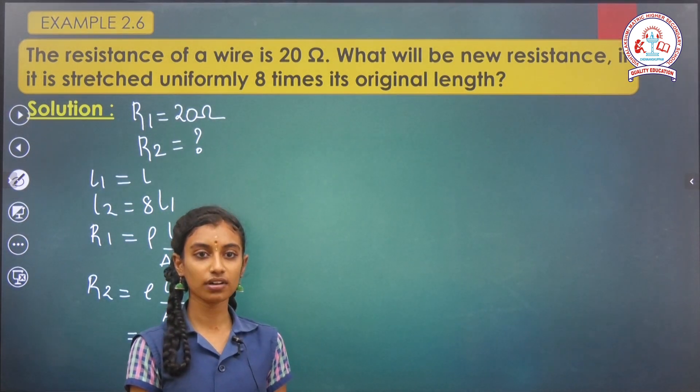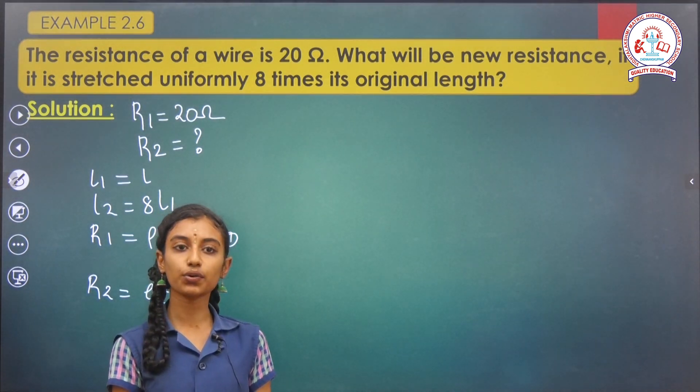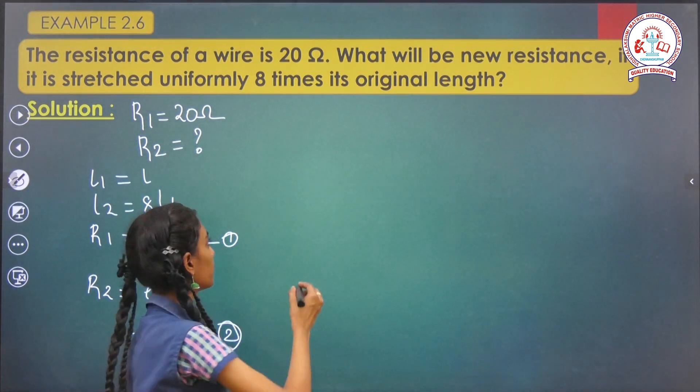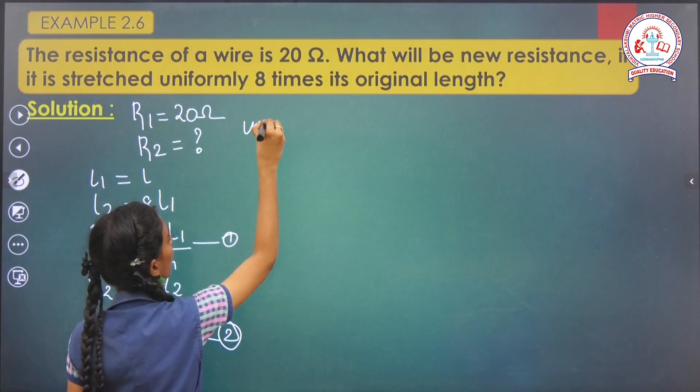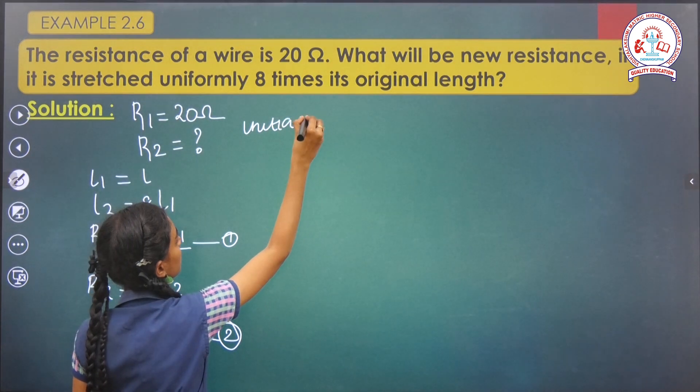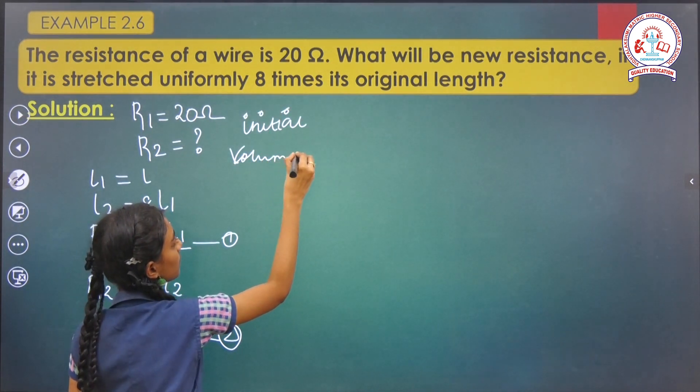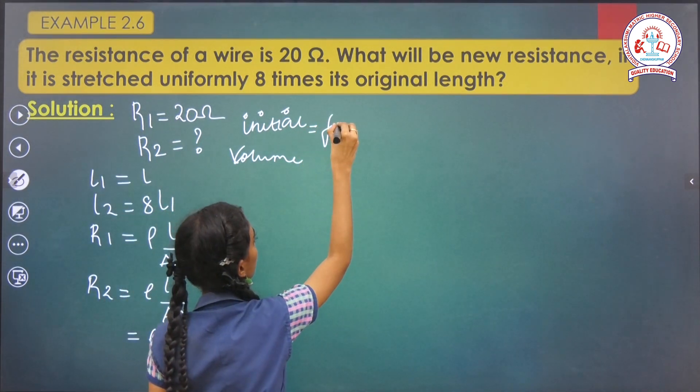If the wire is being stretched, volume remains unchanged, ρ remains constant, and the initial volume equals the final volume.